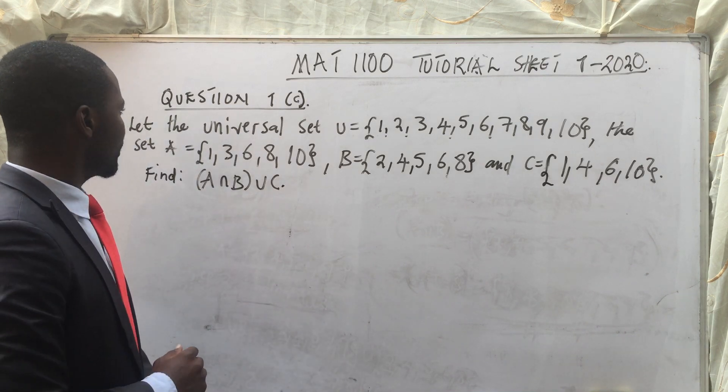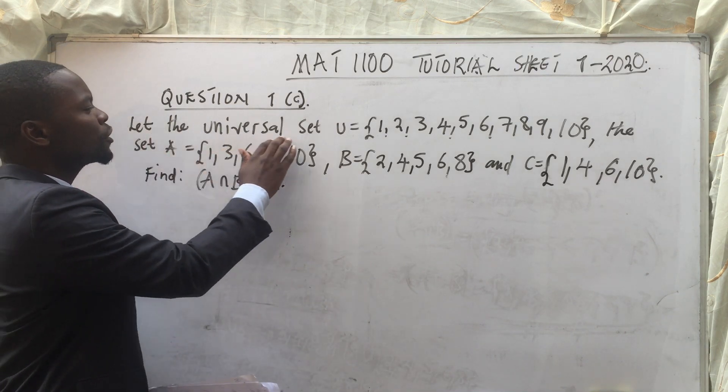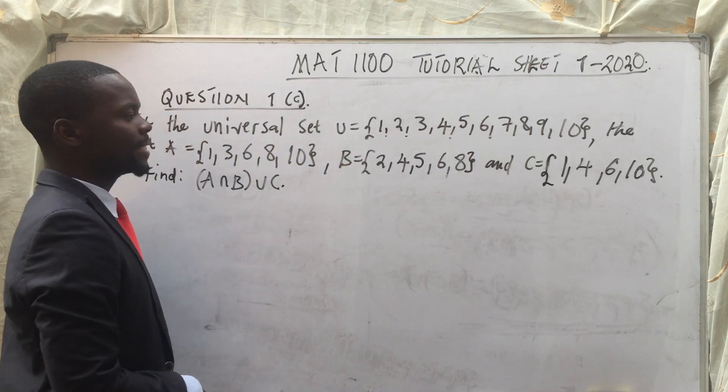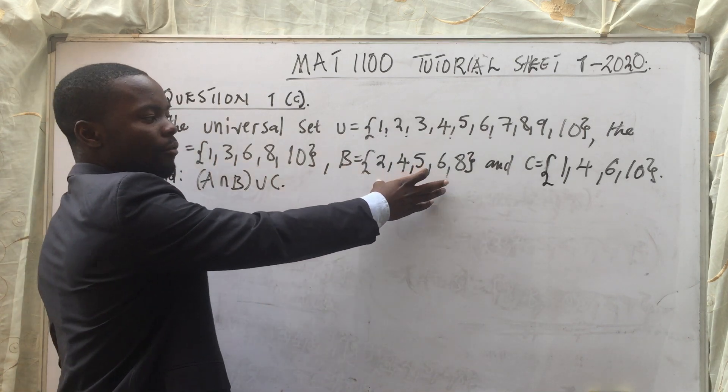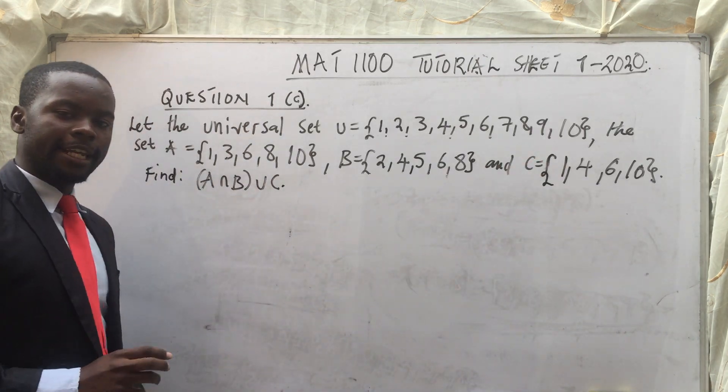Question 1C. So question 1C reads: let the universal set U be these elements, and then set A to have these members, set B to have this, set C to have that.